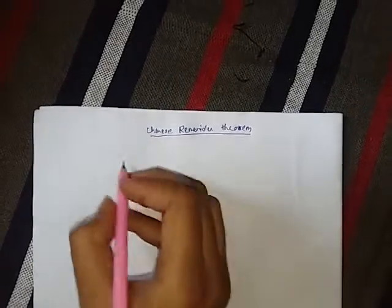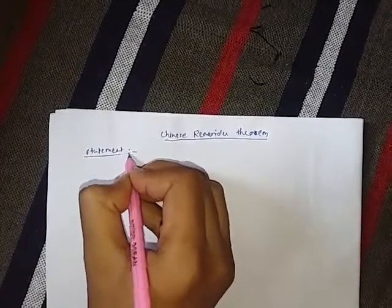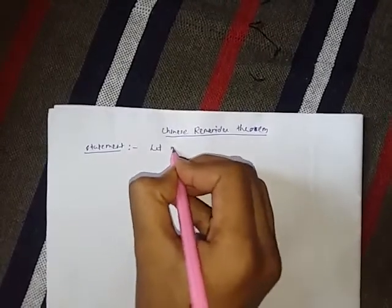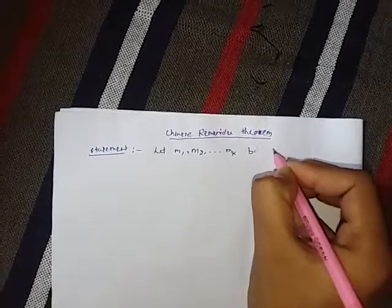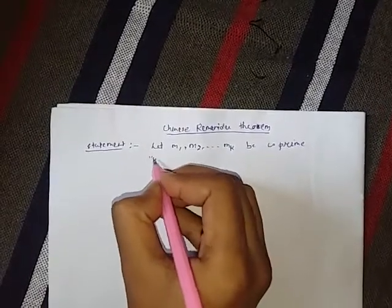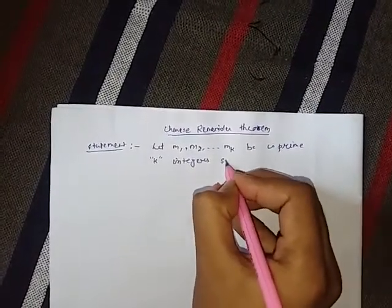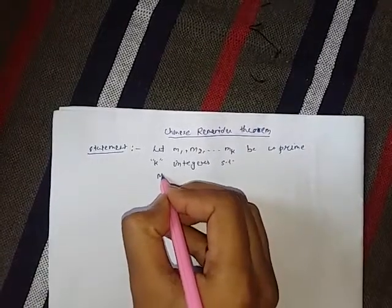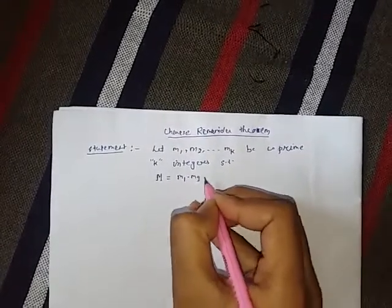Chinese Remainder Theorem. First we will see a statement of this theorem. It states that: let m1, m2, ..., mk be co-prime k integers, such that we define capital M is equal to the product of these m integers.